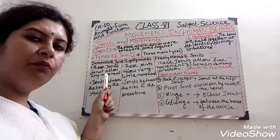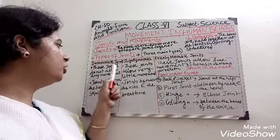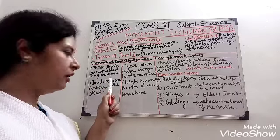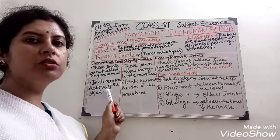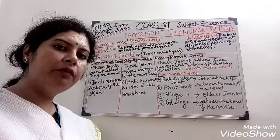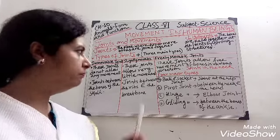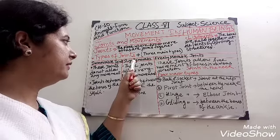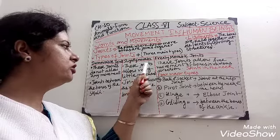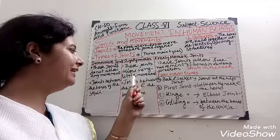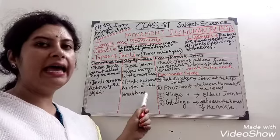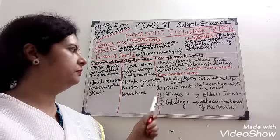Immovable joints do not allow any movement. The joints between the bones of our skull are an example of immovable joints. Slightly movable joints allow very little movement. The joints between the ribs and the breastbone are an example of slightly movable joints.